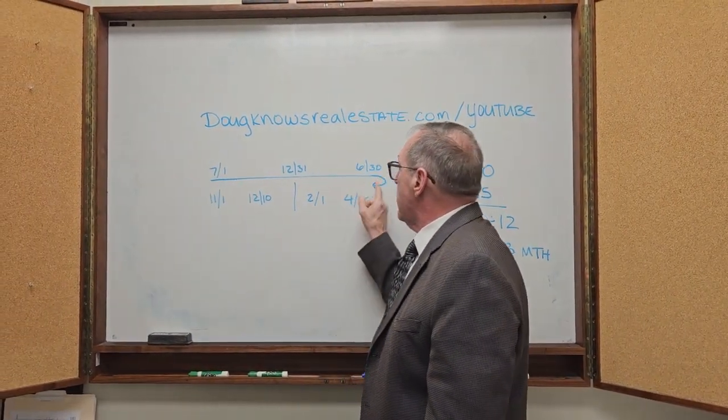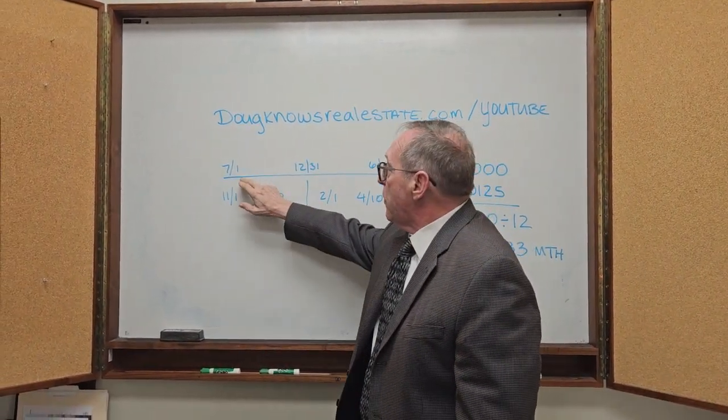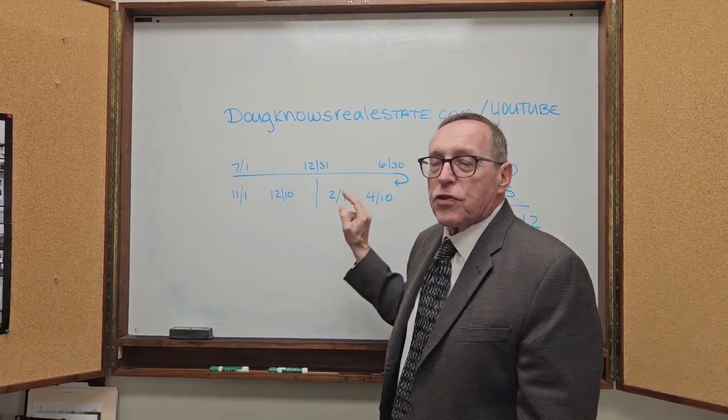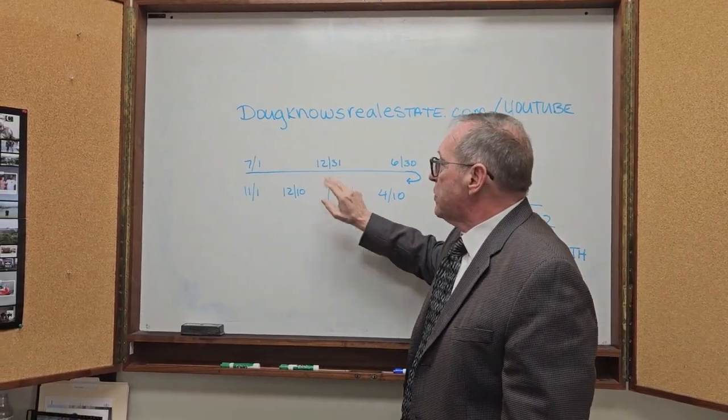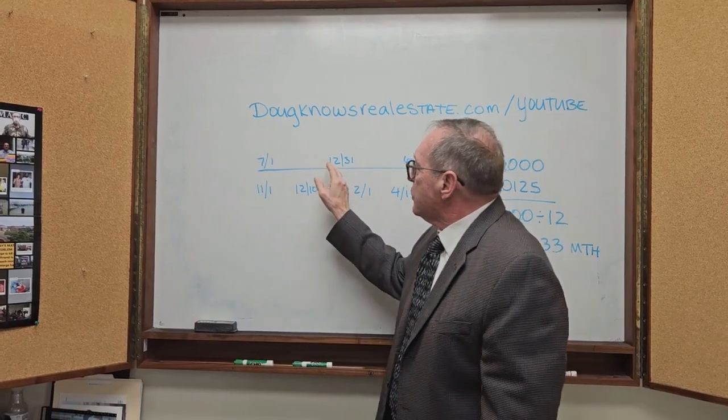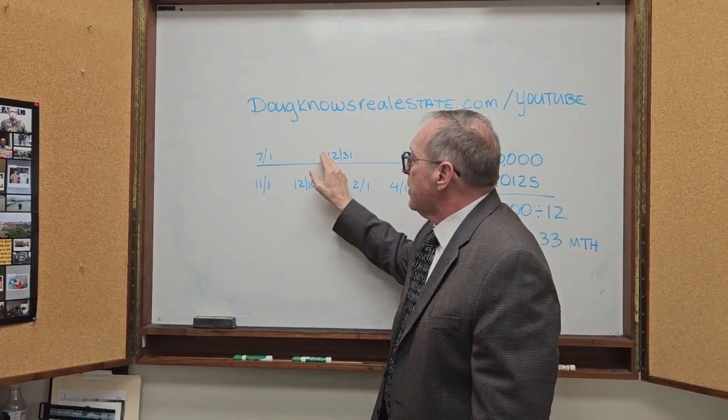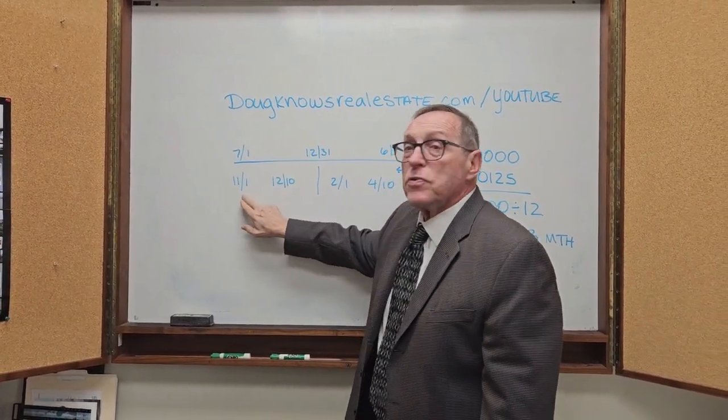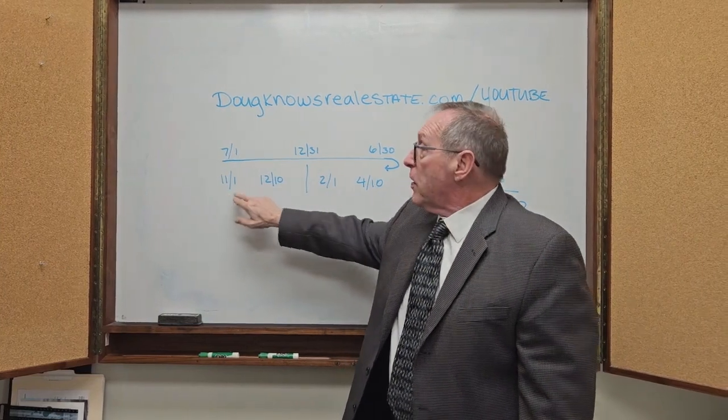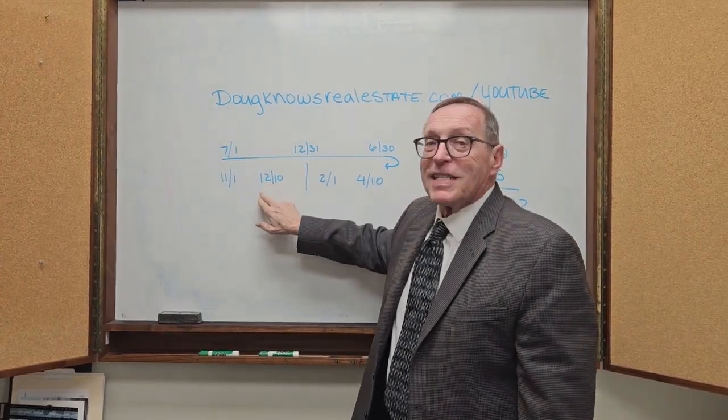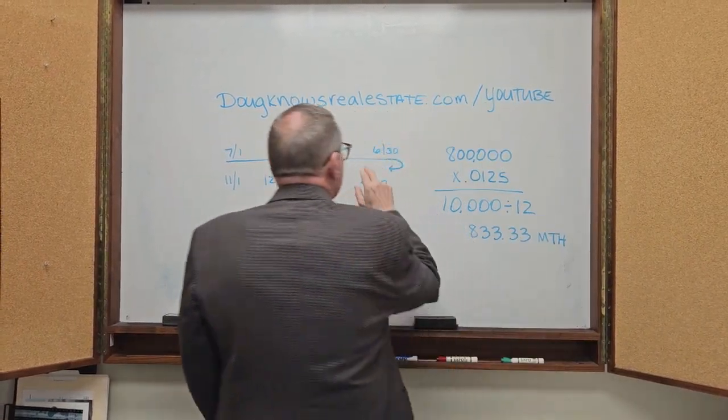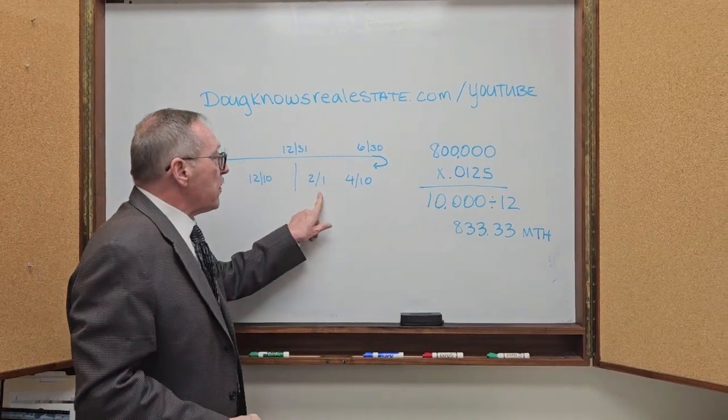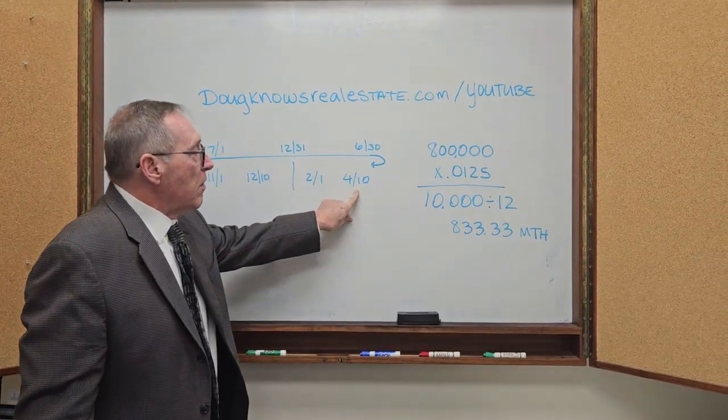This is the California tax year. It begins July 1st and it ends June 30th. Halfway is December 31st. Now these taxes here, the six month segment, that's the first installment. They're due November 1st. They're delinquent December 10th. And then the second installment is due February 1st and delinquent April 10th.